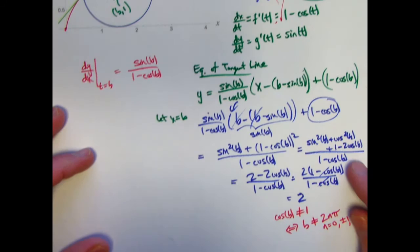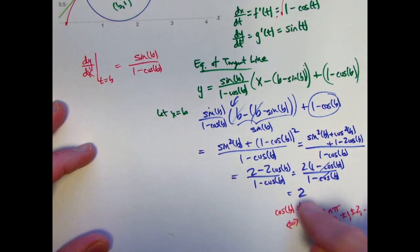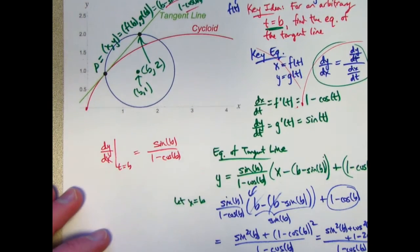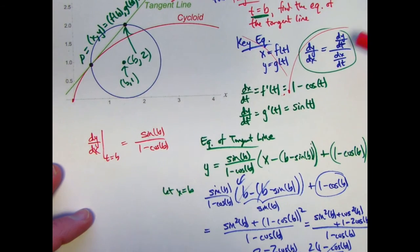Okay, so basically we've solved the problem. We've shown that when x is b, that y is 2 along this tangent line, so this tangent line does go through the top point. Let me just spend, if you're interested, a minute or two just talking about the derivation of this key equation here.